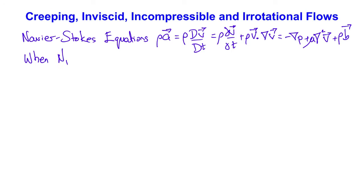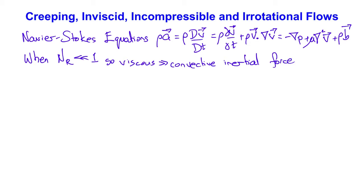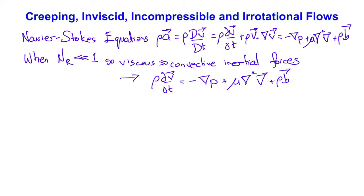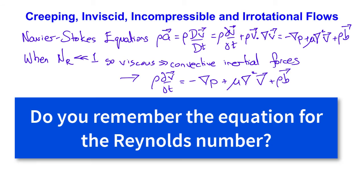When the Reynolds number is much less than 1, the viscous forces are much greater than the convective inertial forces, which can therefore be neglected from the Navier-Stokes equations. This leaves us with density times ∂v/∂t equal to minus the pressure gradient plus the viscous forces plus the body forces. This simplification is linear and applicable to so-called creeping flows.